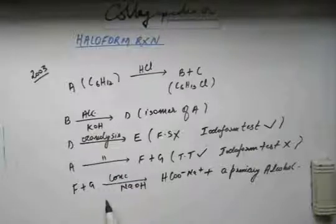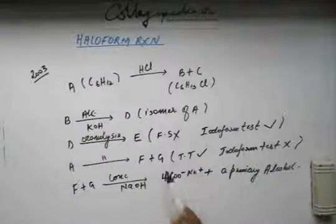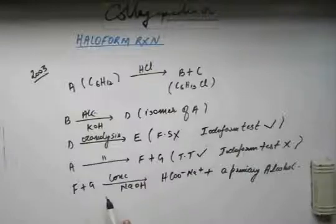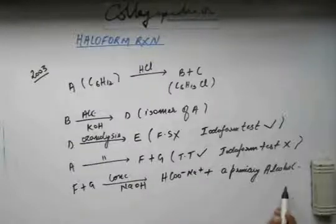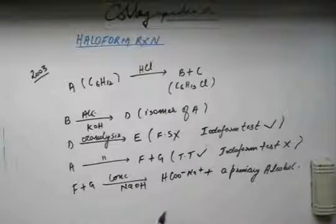Ozonolysis we know what this is, and concentrated NaOH - because F and G both give Tollins test, that means F and G both have aldehyde group. And you are adding concentrated NaOH on compounds having aldehyde group, you are getting an acid and you are getting an alcohol. There must be no trouble in identifying that this is a Cannizzaro reaction. And iodoform reaction we have studied.